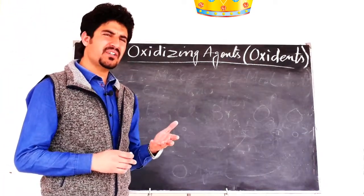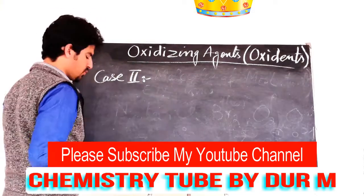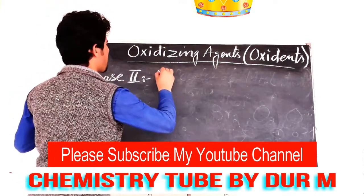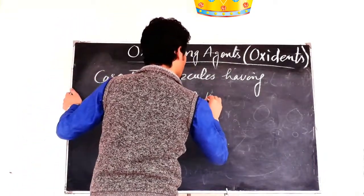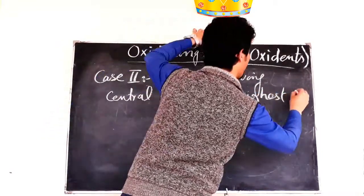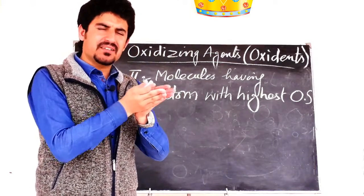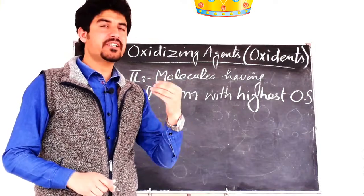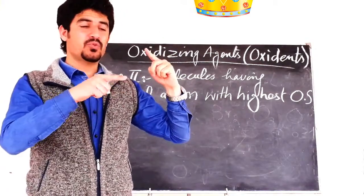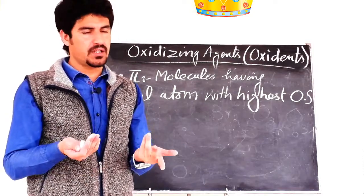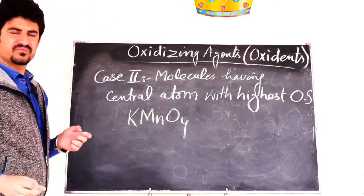Second case: how can we identify the oxidizing agent? The second rule — you can recognize that a whole molecule is an oxidizing agent. Remember that molecules having a central atom with the highest oxidation state are oxidizing agents. For example, KMnO4, where manganese has a plus 7 oxidation state.